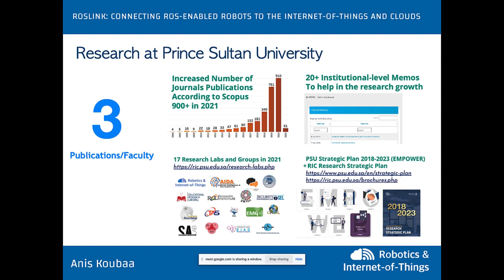Let me give you an overview of Prince Sultan University. It is the first private university in Saudi Arabia, established in 1999. Starting from 2019, we became a research-based university with a complete transformation of our research bylaws. Publications increased dramatically — from under 200 in 2018 to 910 in 2021, nearly three publications per faculty, making us almost number one after KAUST in Saudi Arabia for publications per faculty.